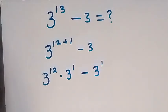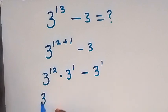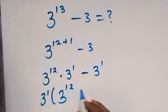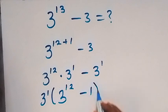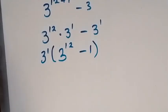In the next step, we can factor 3 raised to power 1 out. Then we have 3 raised to power 12 left here, then minus 1 left here. Then in the next step,